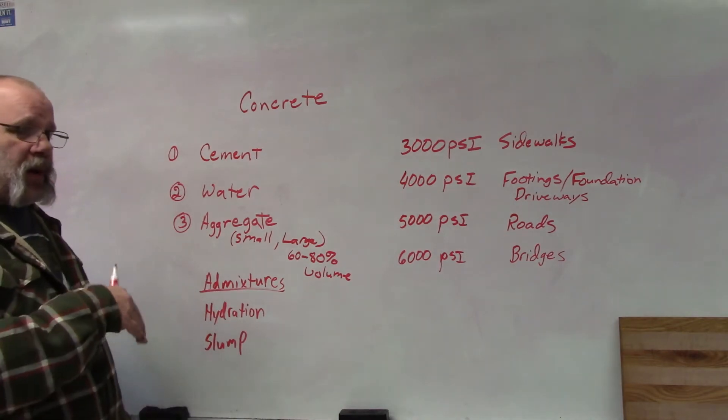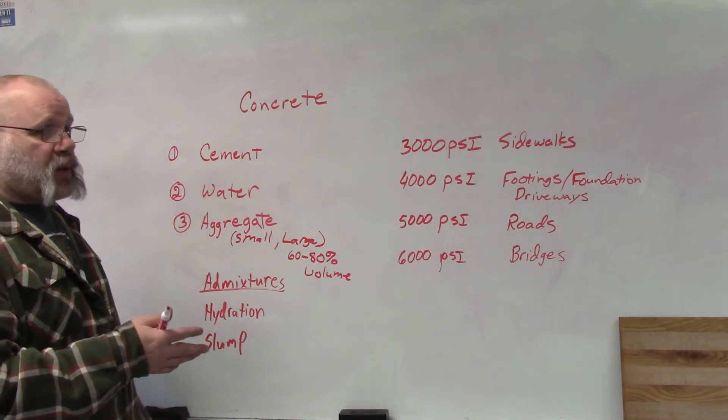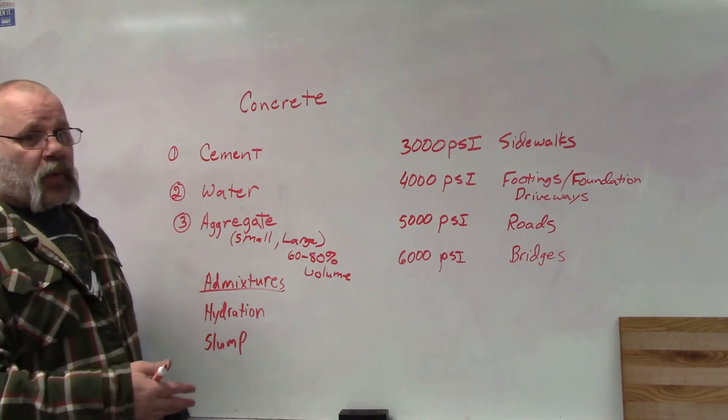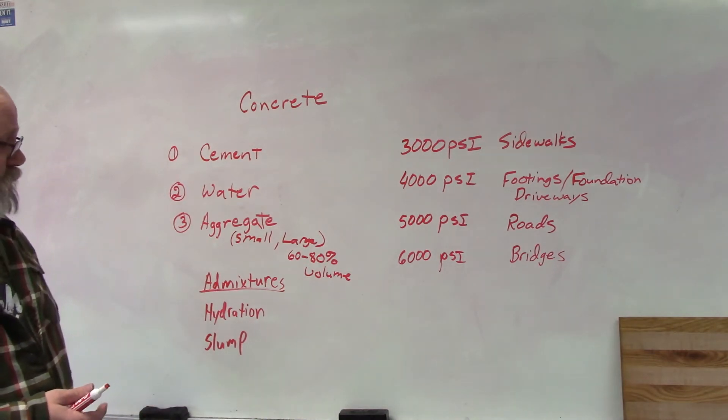So what else can be added to concrete? Admixtures. Admixtures are things that are added to concrete to help with one thing or another. For example, you can add something to make the concrete more pliable, which makes placing concrete easier to work with. You can add something to make it set up faster, or in the summertime maybe you want to slow down the process because it's hot outside, so you put an admixture in there to slow down the process of setting up.